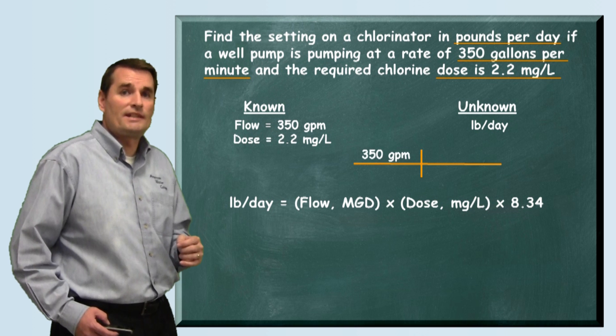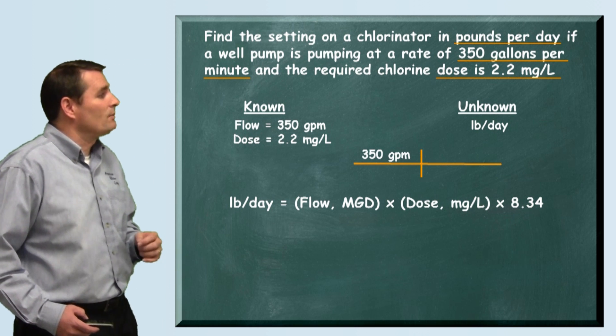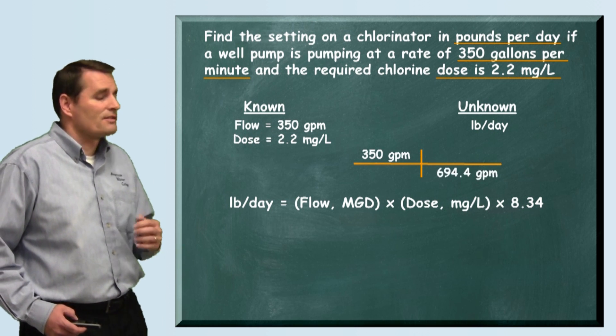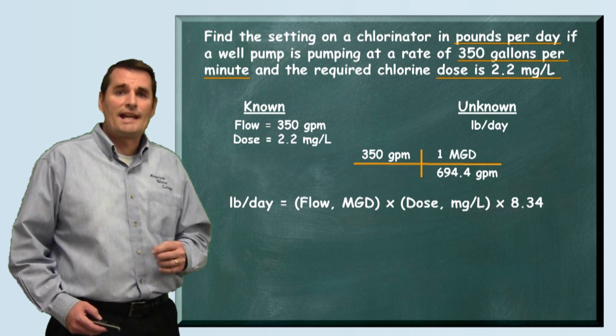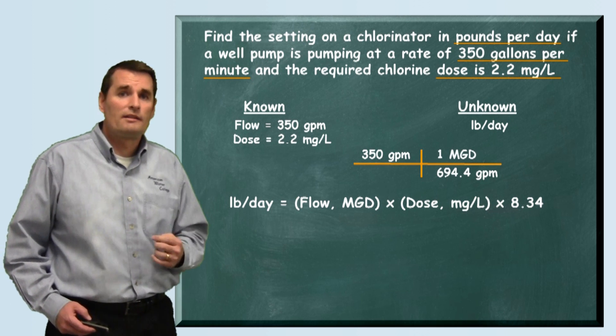We start with the 350 gallons per minute and then we use our equivalent that says there's 694.4 gallons per minute for every one MGD.